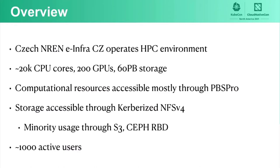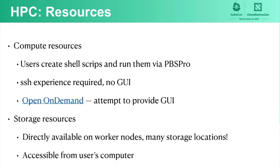We have about 1,000 active users. In HPC we have two types of resources: compute resources and storage resources. Users interact with compute resources via creating shell scripts and running them in the batch system PBS Pro. They need SSH experience because these batch systems do not provide any graphical user interface. We tried to change this by implementing Open OnDemand as an attempt to provide a graphical interface. Storages are directly available on worker nodes, however storage resources are spread among various Czech cities, creating confusion for users who have to manage compute and data affinity.